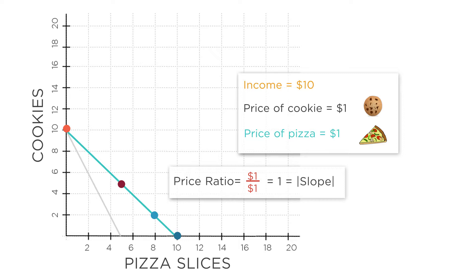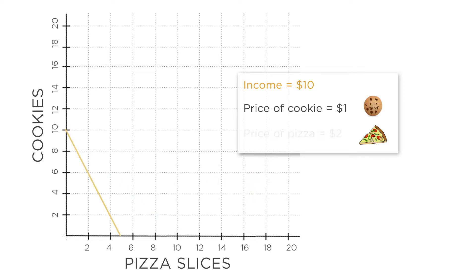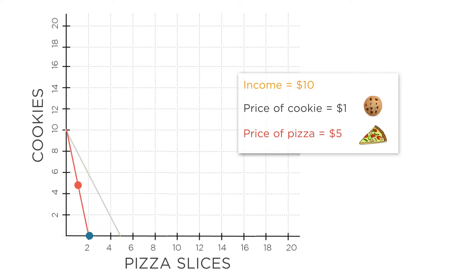What happens if the price of pizza rises? Let's say the price rises from $2 per slice to $5 per slice. Now if you spend all your income on pizza, you can only afford 2 slices. Alternatively, you could buy one slice for $5 and spend the other $5 on 5 cookies. You can see what happens when you connect the dots — the budget constraint has rotated inward because of the price increase. You can now afford less.